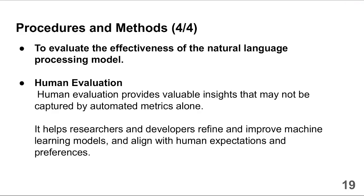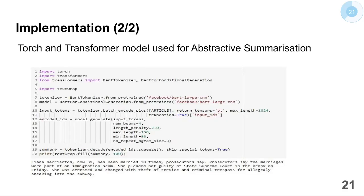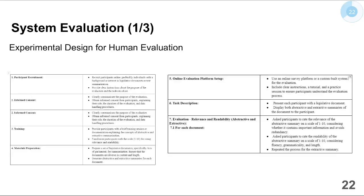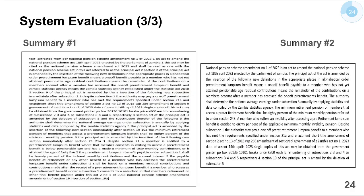To evaluate the effectiveness of the system, we conducted human evaluation. We experimented on two types of summaries — extractive and abstractive — using the National Pension Scheme Act as the source document. Summary one was the extractive summary and summary two was the abstractive summary. Participants used an evaluation template to rate the relevance and readability of both summaries.